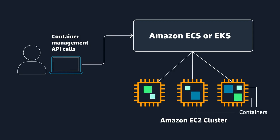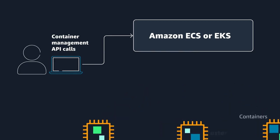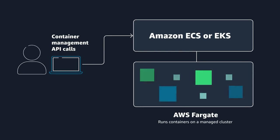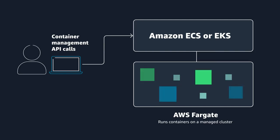Now, EC2 is certainly not serverless. So thinking about serverless compute for containers, I want to introduce to you a service named AWS Fargate. AWS Fargate is a serverless compute platform for containers that you can use with either ECS or EKS. With AWS Fargate as the compute platform, you run your containers on a managed serverless platform.